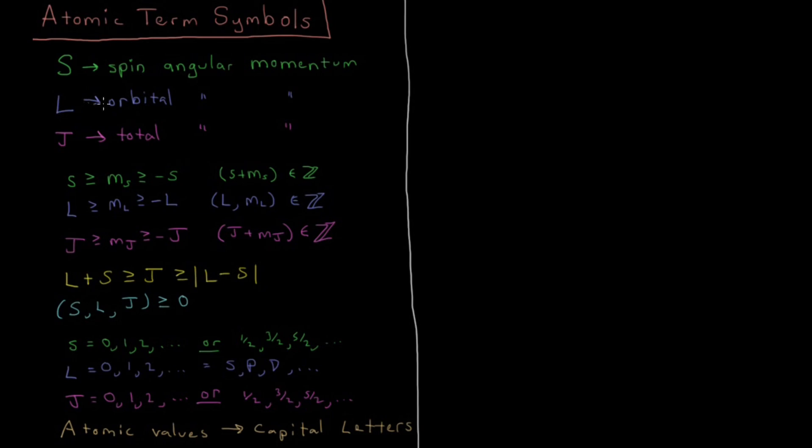L, capital L, being the orbital angular momentum, and capital J being the total angular momentum. And again, the spin and the orbital angular momentum couple together because of spin-orbit coupling. And that is an effect that comes out of relativity.